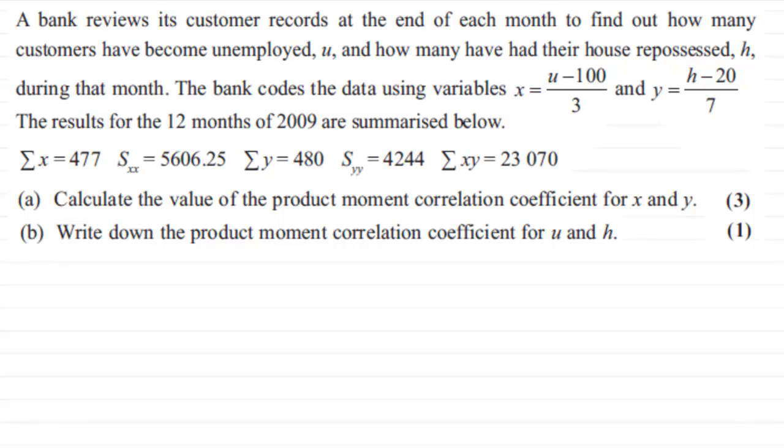Let's have a look at this question. What we've got is a bank that reviews its customer records at the end of each month to find out how many customers have become unemployed, u, and how many have had their house repossessed, h, during that month.